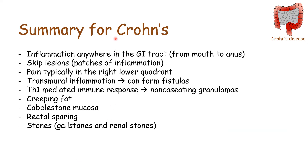A quick summary of Crohn's disease: inflammation can occur anywhere in the GI tract from mouth to anus; skip lesions are patches of inflammation between healthy portions of bowel; pain is typically in the right lower quadrant due to terminal ileum involvement; transmural inflammation can lead to fistulas; it is a T helper 1 mediated immune response leading to non-caseating granulomas; the bowel will have creeping fat, cobblestone mucosa, and rectal sparing; and stones — gallstones and renal stones — are more common in Crohn's.